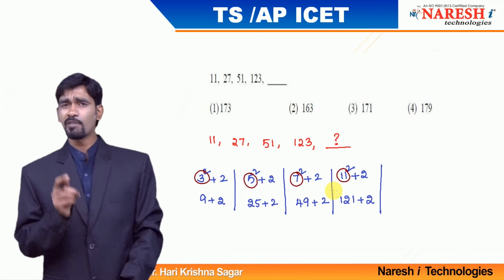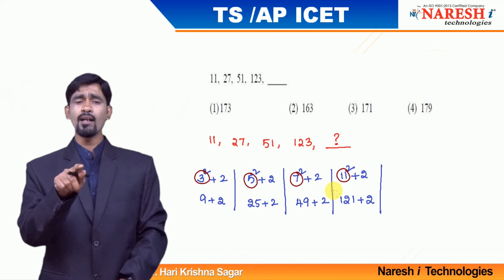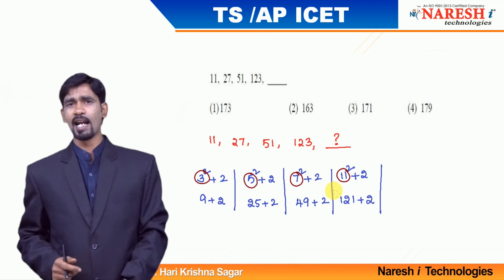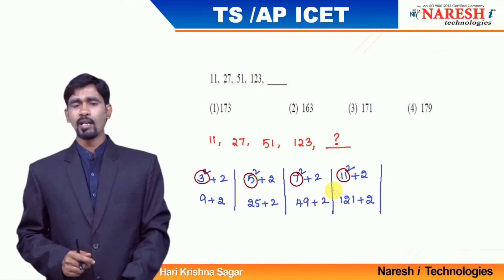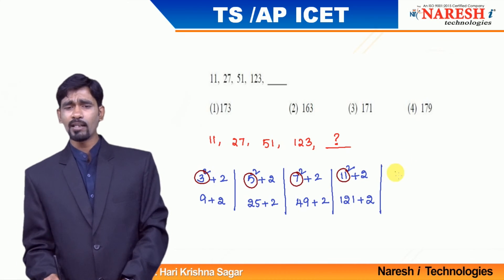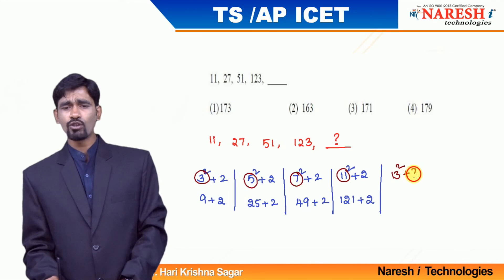These are not just odd numbers. If they were odd numbers, after 7 you would get 9. So after 11, we ask: what is the next prime number? The next prime number is 13. Therefore, 13 squared plus 2 should be your answer.